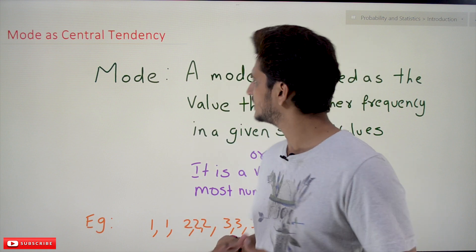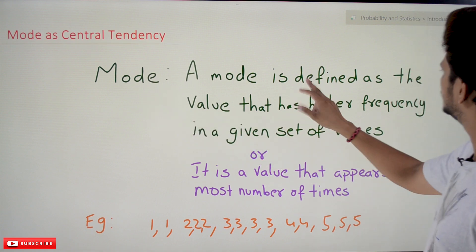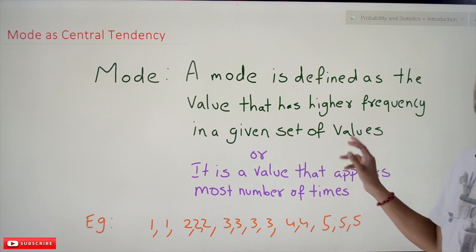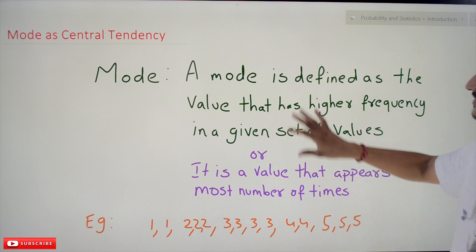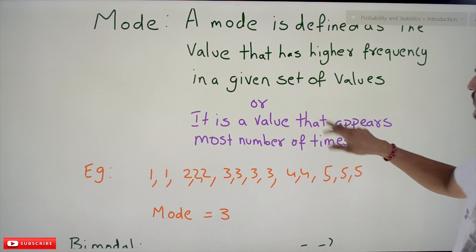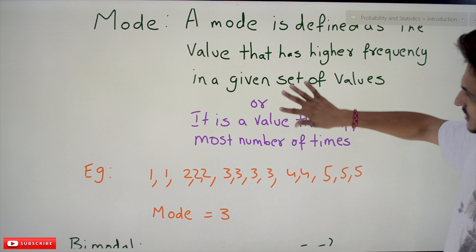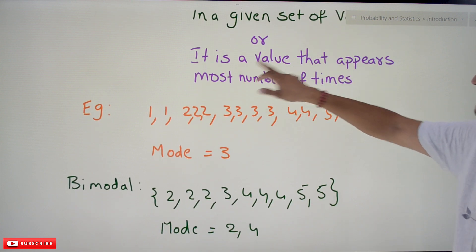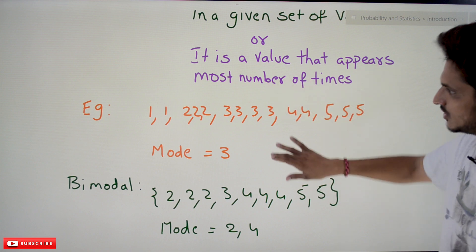Coming to today's class, let's try to understand what mode is. Mode is defined as the value that has the higher frequency in a given set of values. We can also say it is the value that appears most number of times. Let's take an example to understand what mode means.